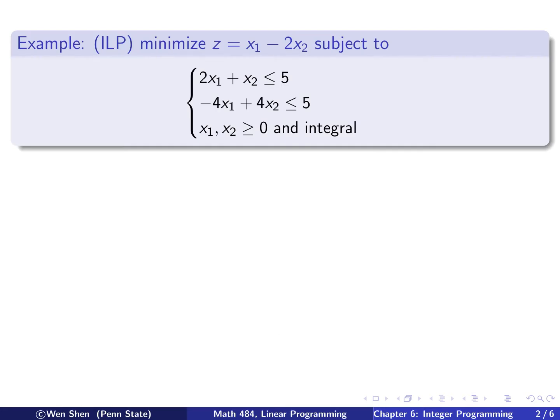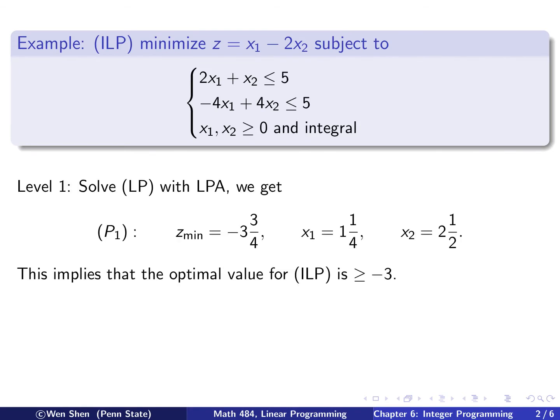So here is our problem, ILP. Minimize the objective function, subject to two constraints, and the variables are restricted and integral. So let's follow the outline of the algorithm. So this takes several levels of branching out.